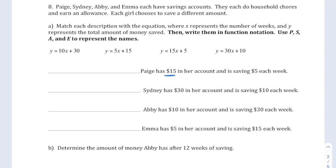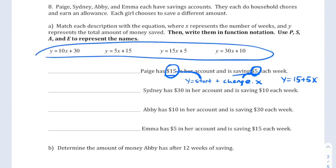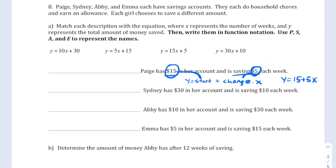Page has $15 and is saving 5. The start is 15, the change is 5. So we've been writing y equals start plus change x. So the change is always attached to the x. So this 5 should go with the x and this 15 should go as the starting value. y equals 15 plus 5x. Now, they write all of these equations up here with the x term first. So instead of writing 15 plus 5x, I'm going to look for 5x plus 15, which is this equation.